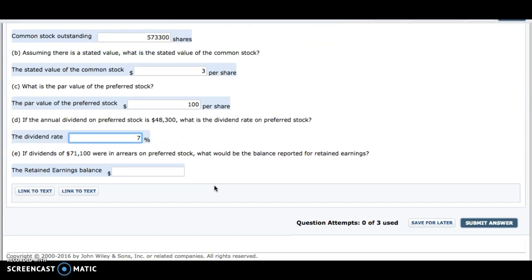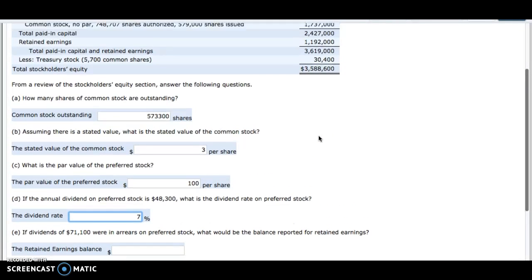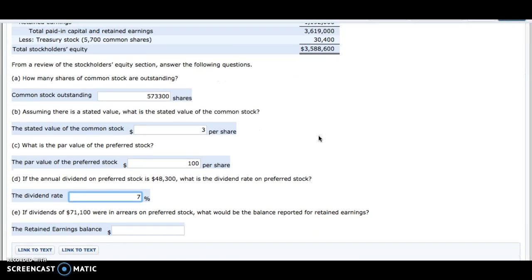The last question here is, if dividends of $71,100 were in arrears on preferred stock, what would be the balance reported for retained earnings? Now, I'm not totally sure about this. Hopefully, I guess we'll find out when I submit the answer.